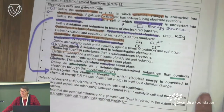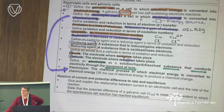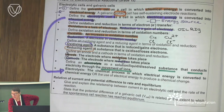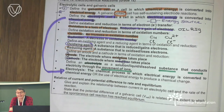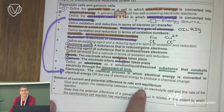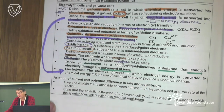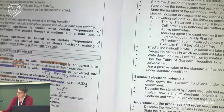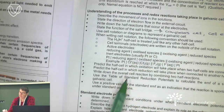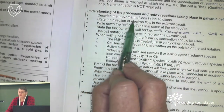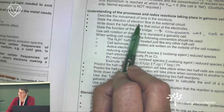The next thing we're going to look at is galvanic cells. Galvanic cells are self-sustaining — they make use of chemical energy and convert it into electrical energy. So there will not be an electrical source. We must understand the movement of ions in solution, the direction of electron flow, how to write half reactions, and the functions of a salt bridge.